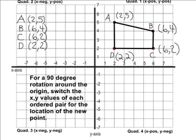There's an easy way to precisely figure out where your figure is going to be transformed to. Simply take each of the ordered pairs that you have written and switch the order of them.